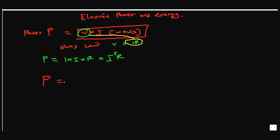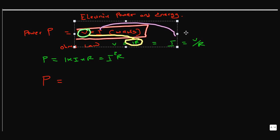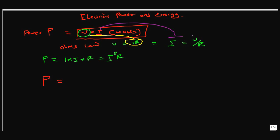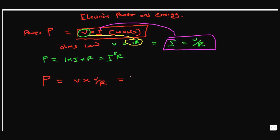We can obtain yet another expression for power. We know P = V×I, and from Ohm's Law, current is voltage divided by resistance. So we can replace I with V/R, giving us power equals V times V over R — that is V²/R.